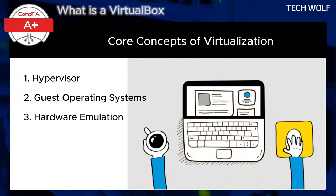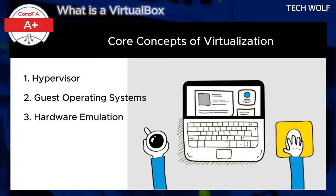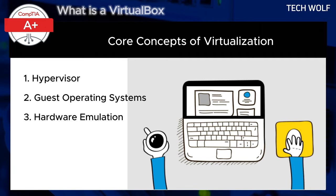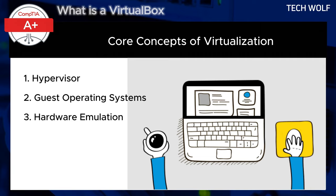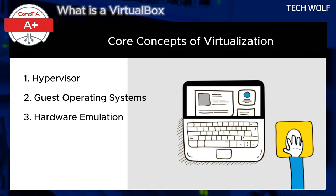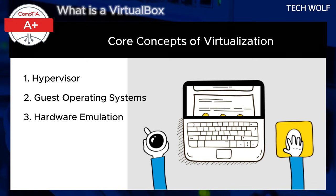Hardware emulation: VirtualBox emulates a range of hardware components such as network cards, storage controllers, CPUs, and graphics cards. This allows guest operating system environments to interact with what they perceive as real hardware, without conflicting with the host operating system.